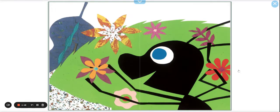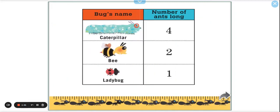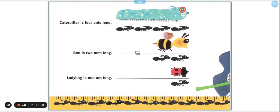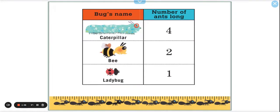Oh, wow. They're getting ready. Beautiful decorations. Bug's name and number of ants long. Okay, so these are the bugs and their names and how many ants long they are. So this shows us this information just in a table form, in a graph, a different looking graph. So the caterpillar is how many ants long? Four. The bee is how many ants long? Two. And the ladybug is how many ants long? Just one.